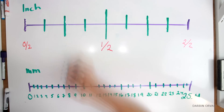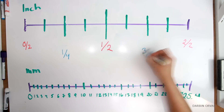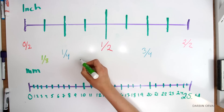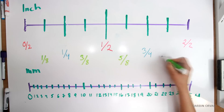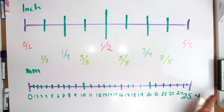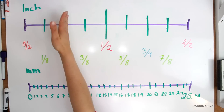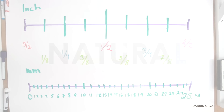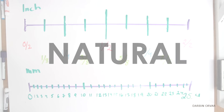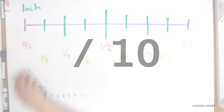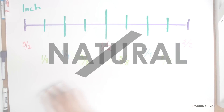So I have half, one quarter, one eighth, and so forth. The fundamental concept of fractions is that you can divide in half and half and half and half, and that is very natural for us to do. Dividing in 10, on the other hand, is not.